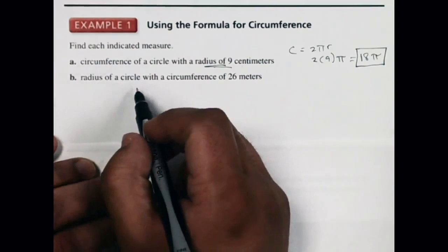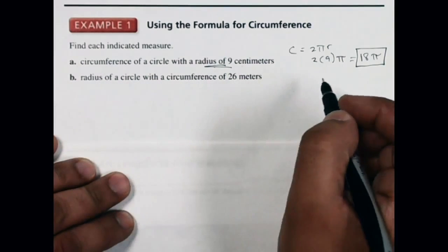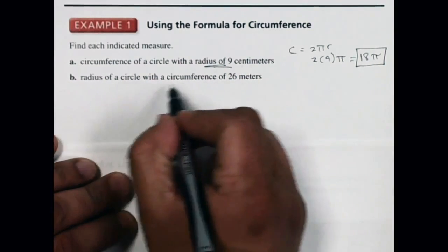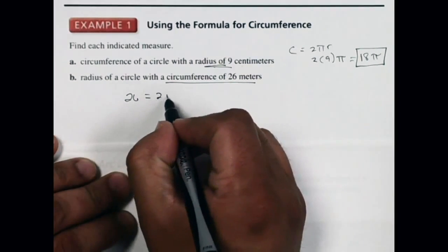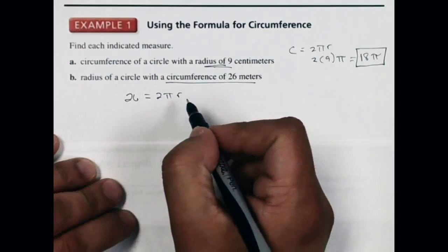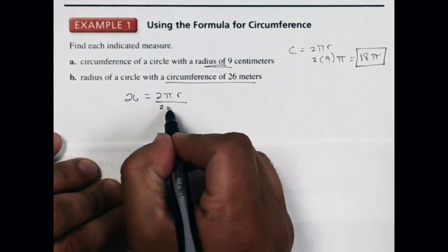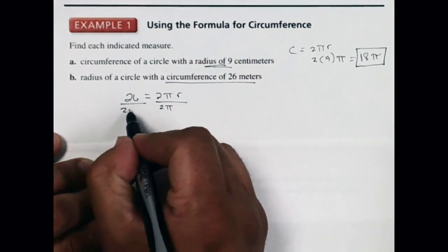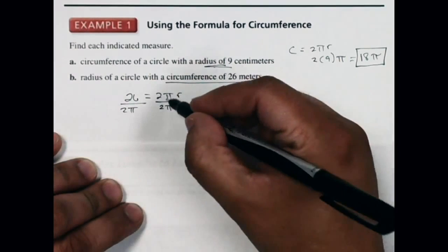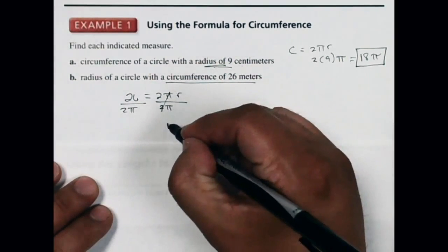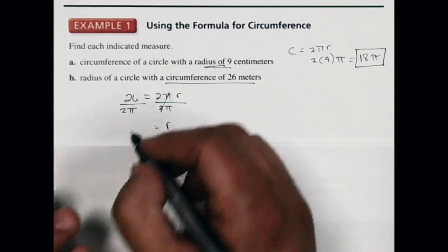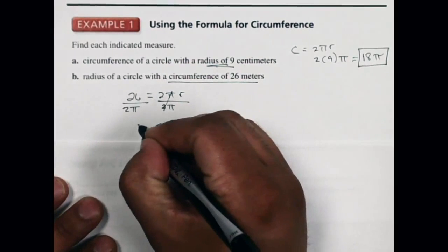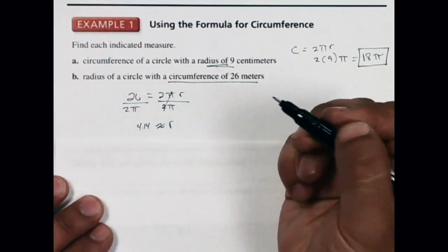For example 1b, they want us to find the radius of a circle with a circumference of 26 meters. Since they're giving me the circumference, I put 26 on the left-hand side: 26 equals 2 times pi times the radius. Dividing both sides by 2 pi, the radius equals 26 divided by 2 pi, which is about 4.14.